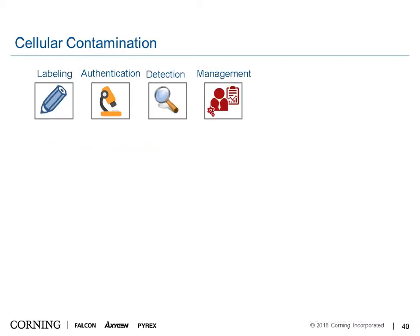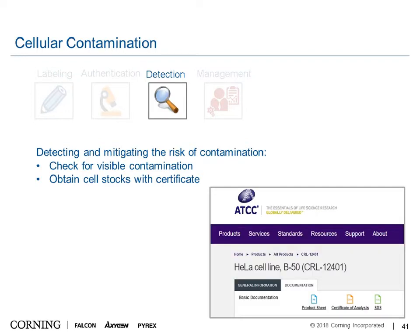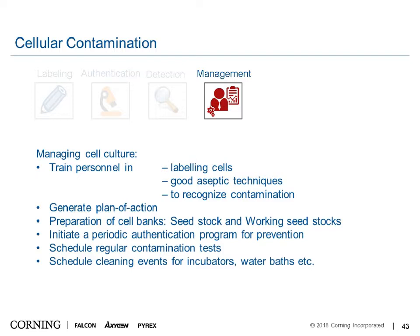To detect cellular contamination, the easiest approach is to check cells under a microscope and look for cell lines that appear unusual. Obtaining cell stocks with a certificate of analysis — for example, from ATCC when buying a HeLa cell line — is also helpful, as these certificates state how the cell line was tested and what its characteristics are.